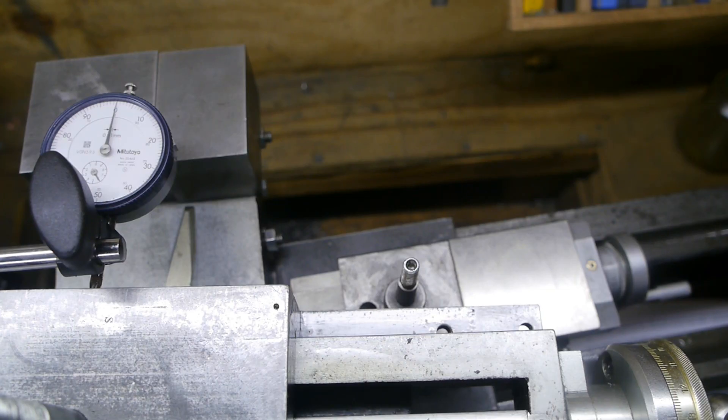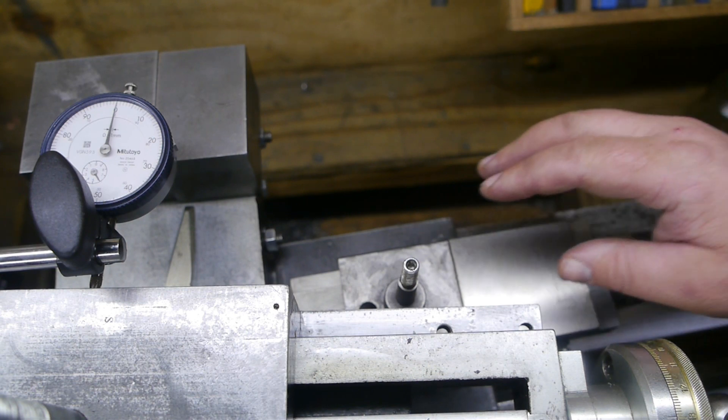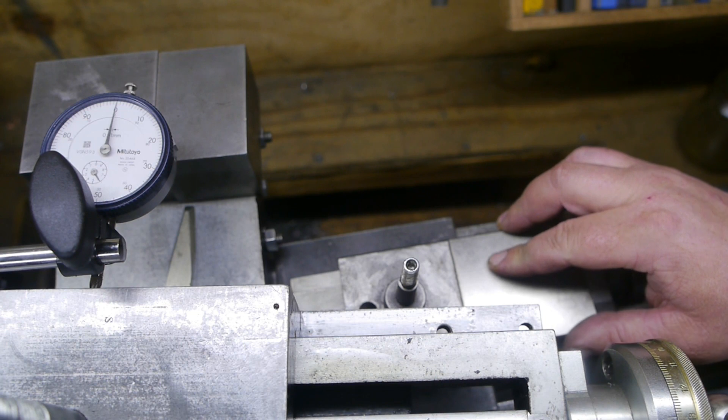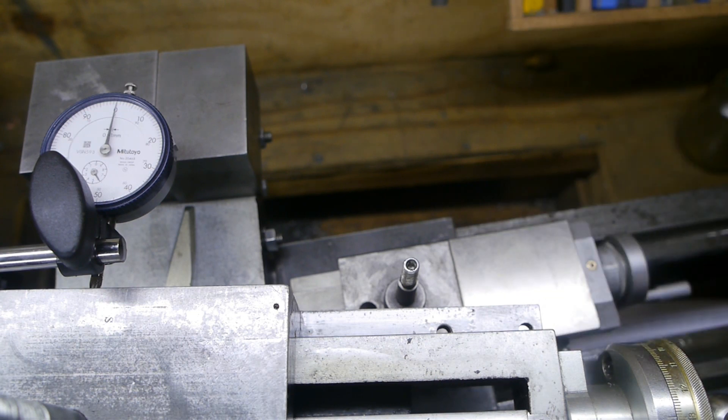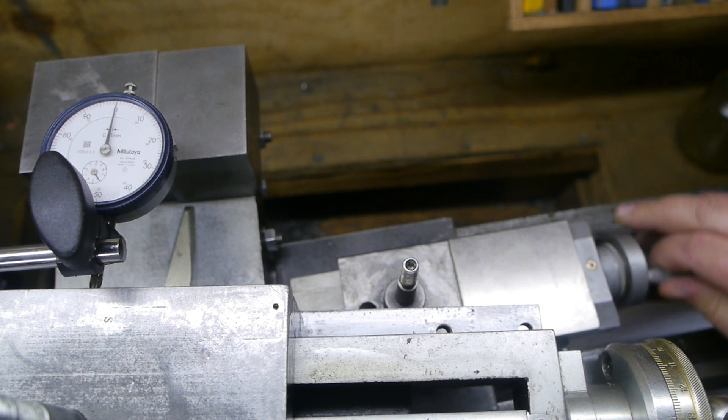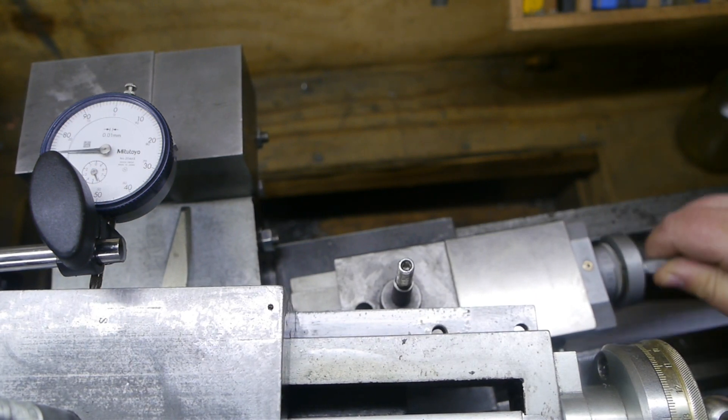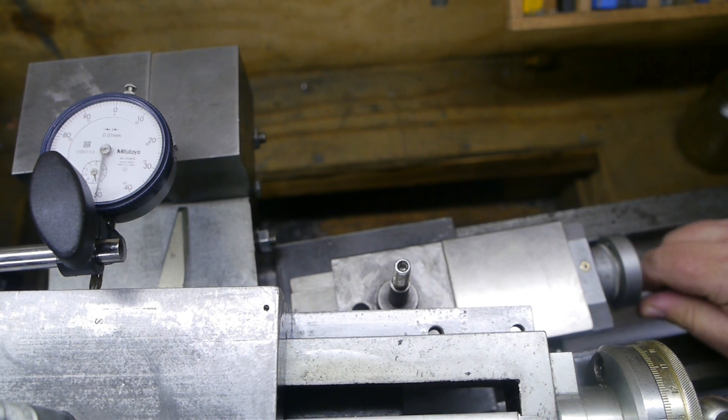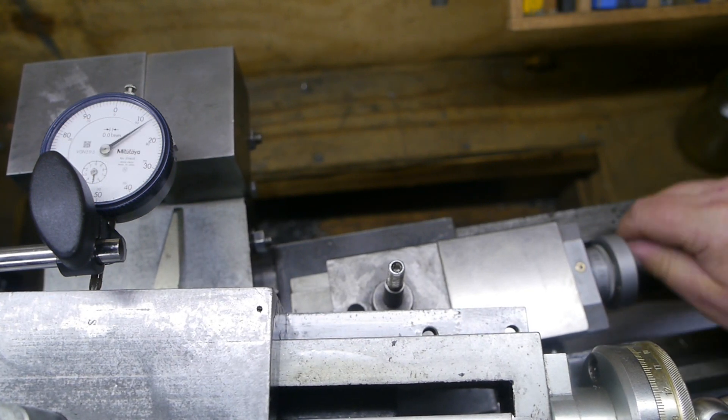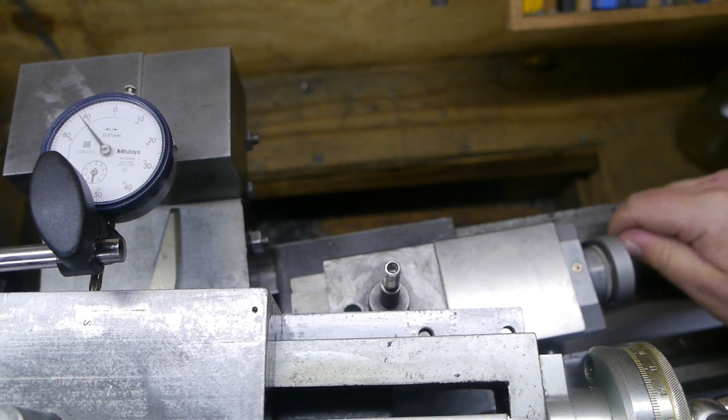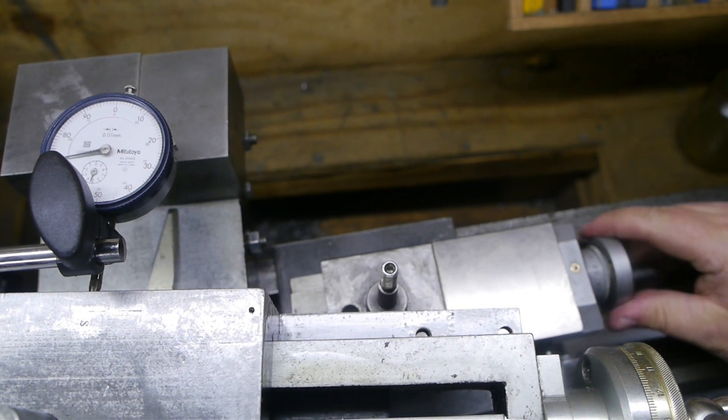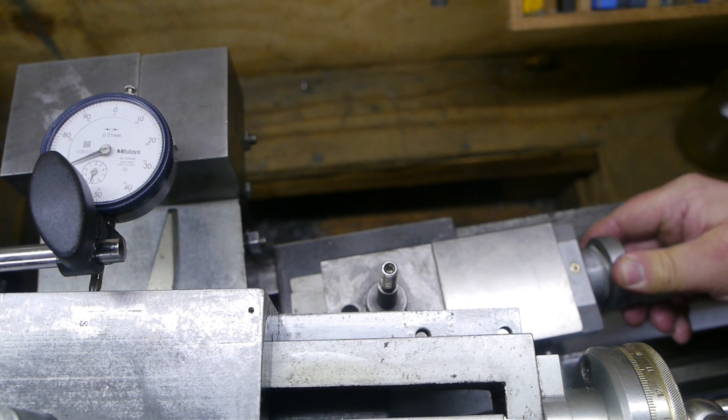I haven't used the lathe since last week, so the angle on the top slide should still be the same. If I move the compound here for 10 turns, that's 1 centimeter, the deflection on the needle here should be 1.4 millimeter. So here we go: 1, 2, 3, 4, 5, 6, 7, 8, 9.